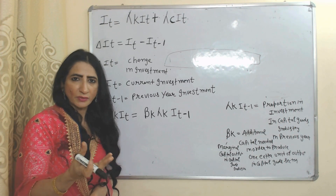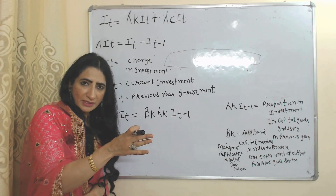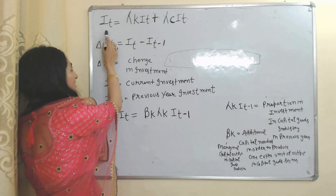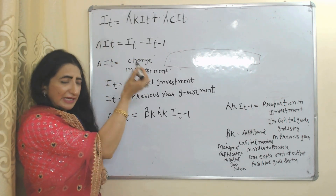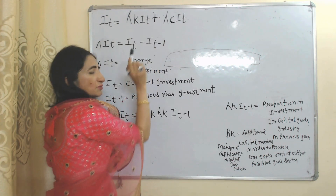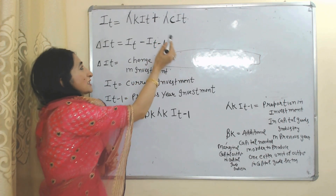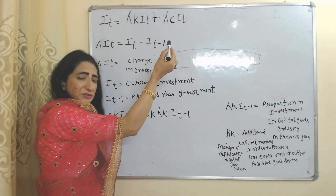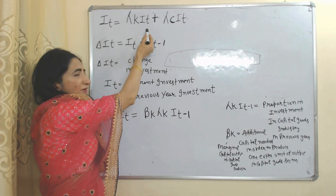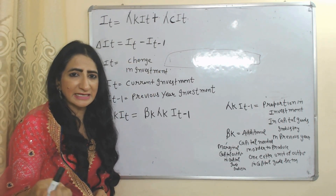This is a two-sector model — we can invest either in capital goods industries or in consumer goods industries. That's why total investment equals investment in capital goods industries plus investment in consumer goods industries. Here, I_t is total investment in year t, which equals investment in capital goods industries plus investment in consumer goods industries. This part represents investment in capital goods industries and this part represents investment in consumer goods industries in year t.